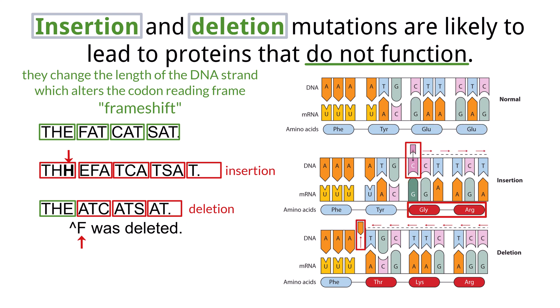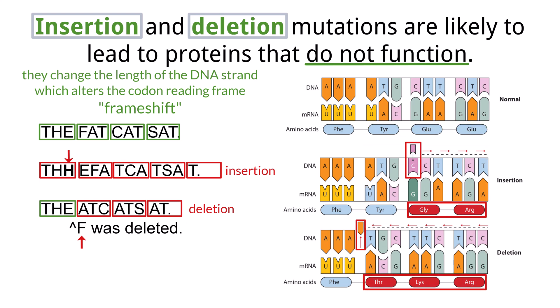When an adenine is deleted, the amino acid coded by this sequence changes from glutamic acid to threonine, lysine, and arginine. Notice the location of the insertion or deletion will determine how many subsequent amino acids are altered.